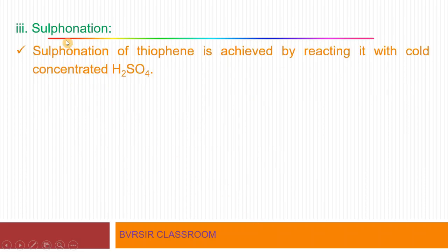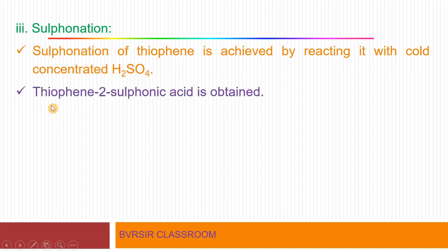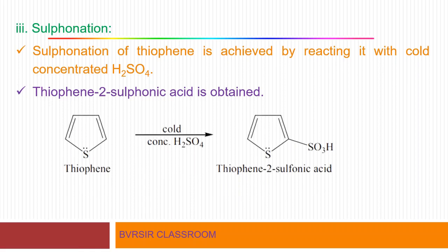Sulfonation is another electrophilic substitution reaction involving the SO₃ group. Sulfonation of thiophene is achieved by reacting it with cold concentrated sulfuric acid (H₂SO₄). The SO₃ group substitutes at the second position, giving thiophene-2-sulfonic acid as the product.